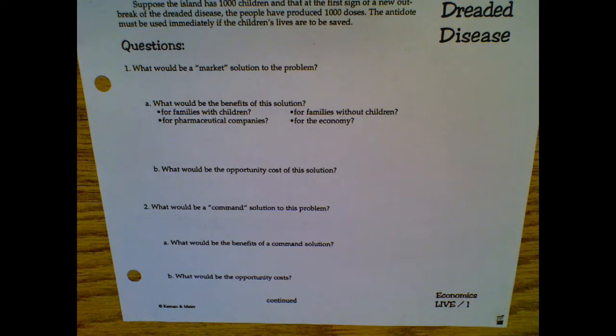Since we have 1,000 kids and 1,000 doses, if one family is taking three or four doses and they have multiple kids, we know that there are going to be some kids that aren't going to get a dose at all and end up with a 90% chance of dying. So with the market solution where you put a price tag on it, the opportunity cost is that the ability to make sure that every child gets one dose. So we are going to have some kids who are going to die in this situation.